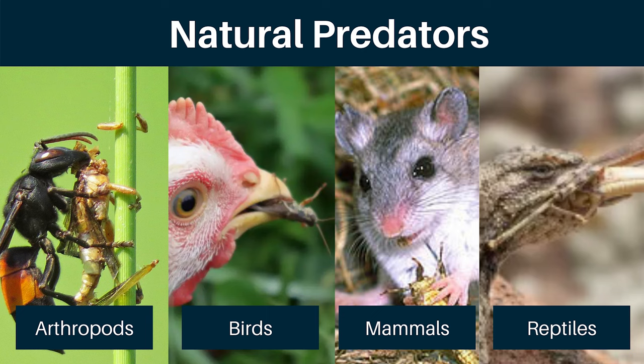Many other naturally occurring enemies for grasshoppers in Utah do exist. This can include other arthropods, birds, mammals, and reptiles.